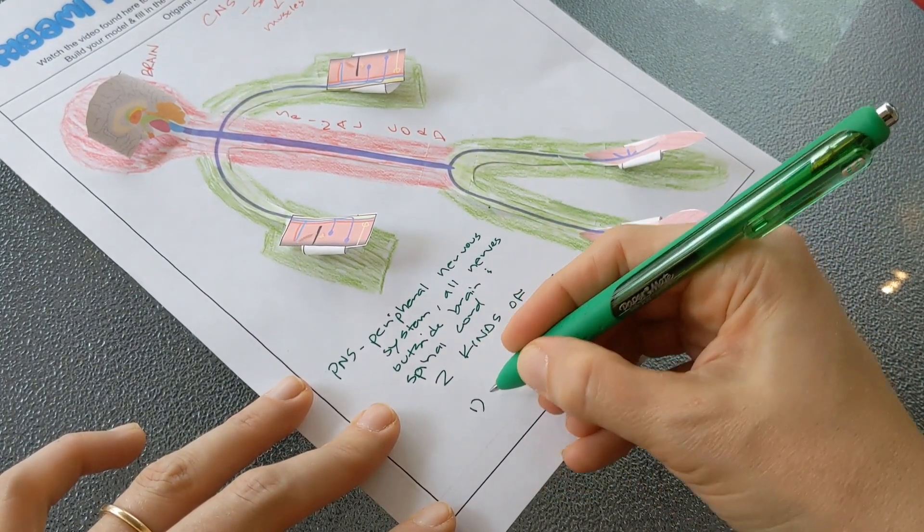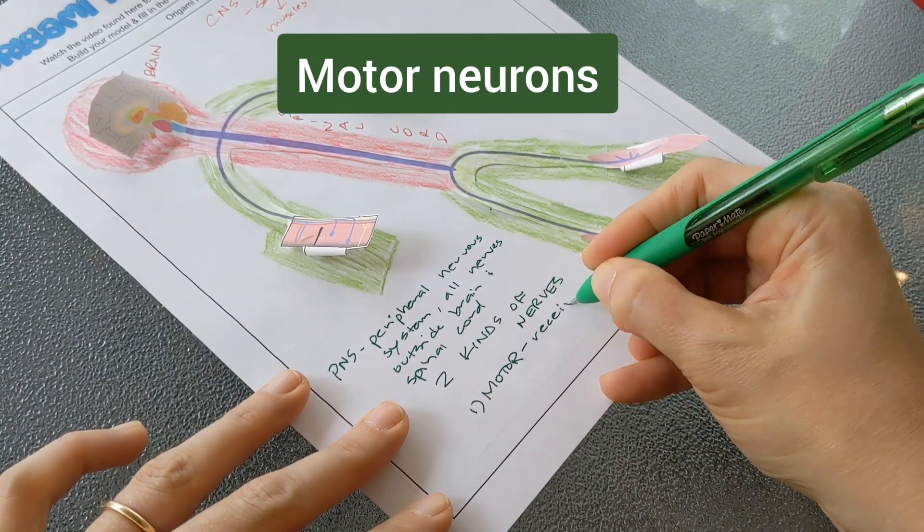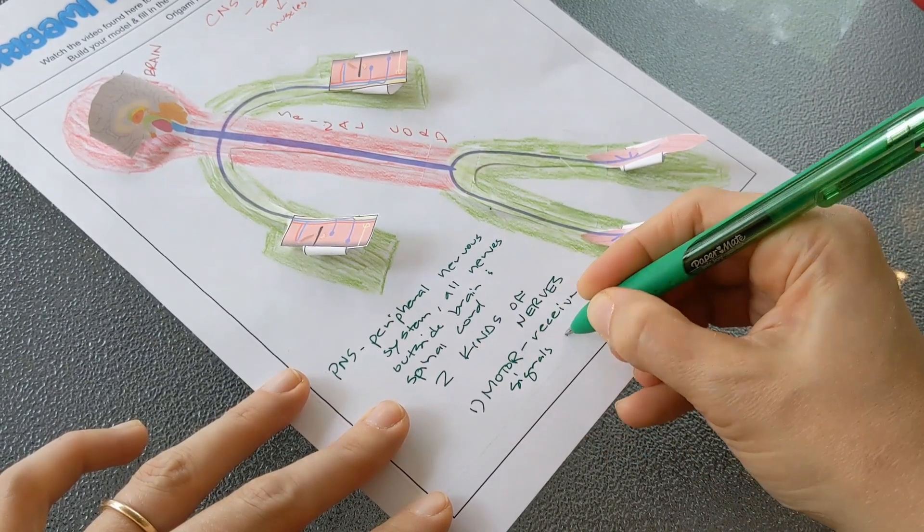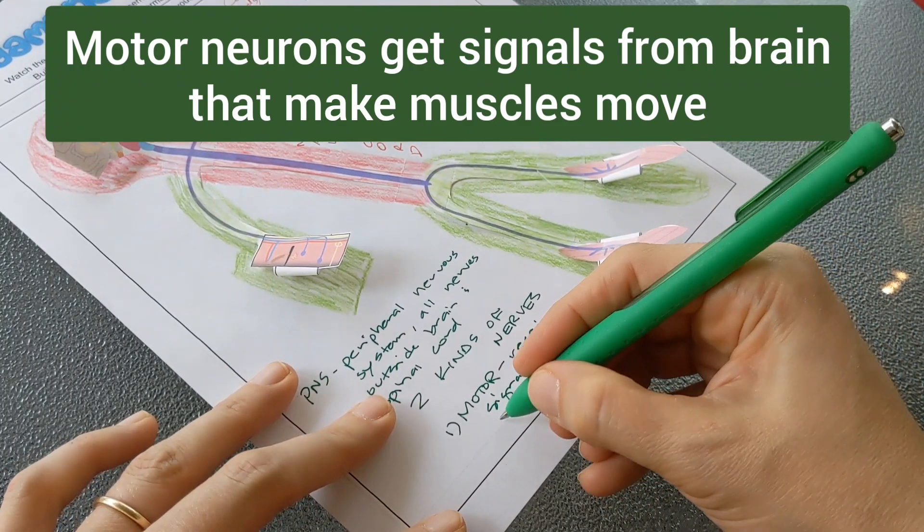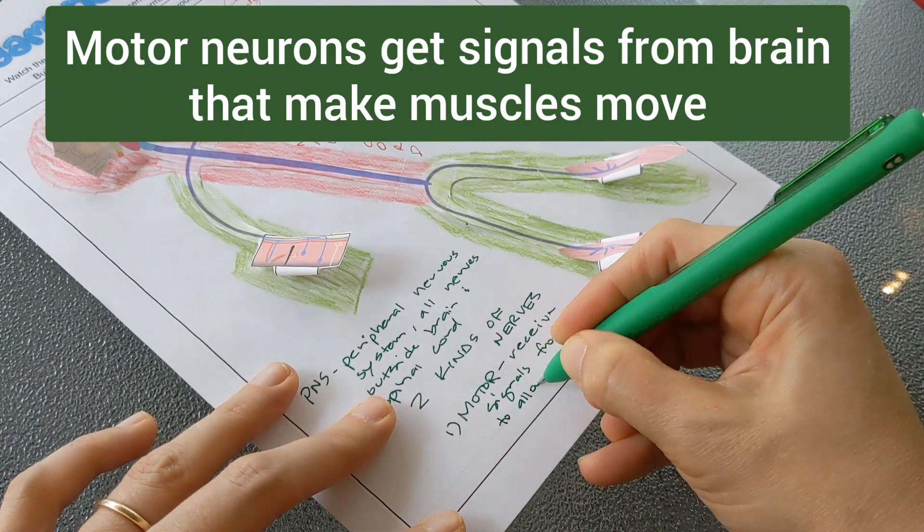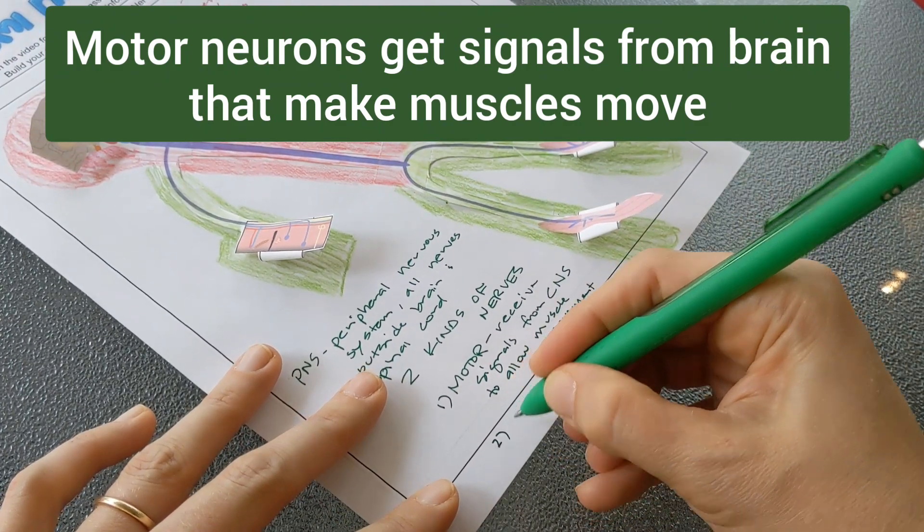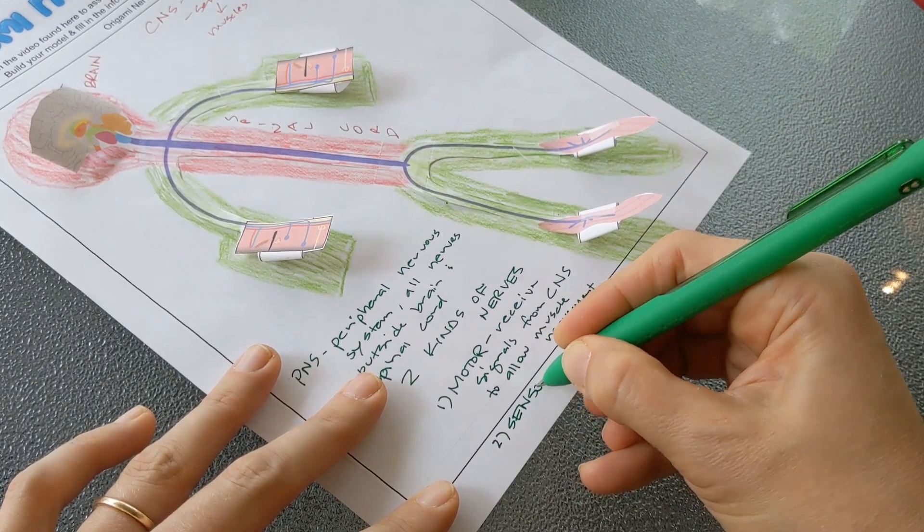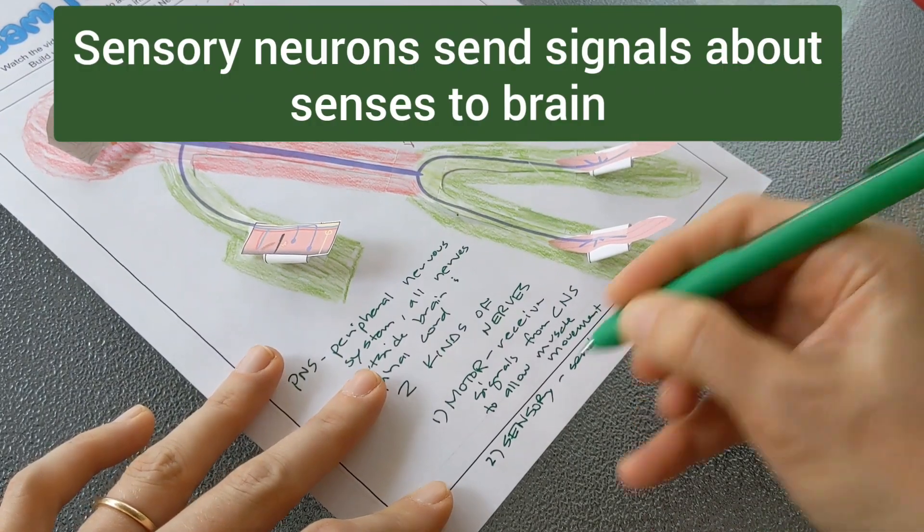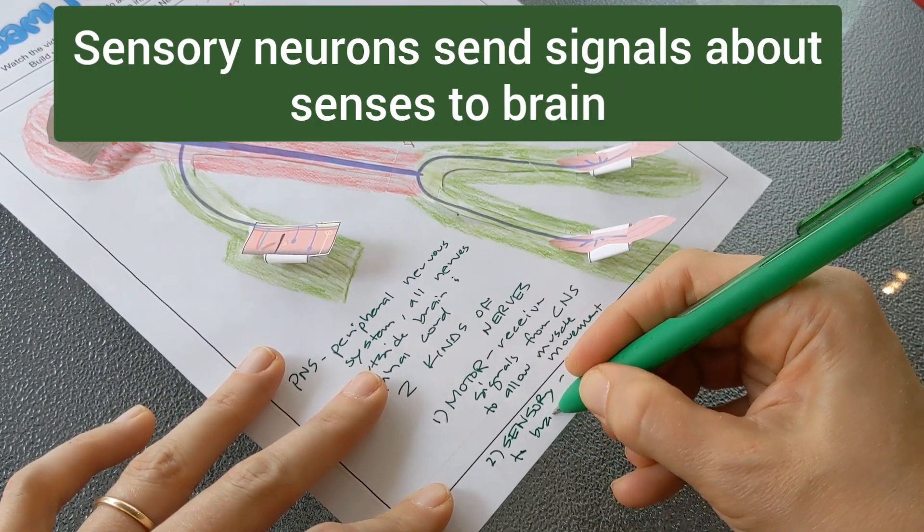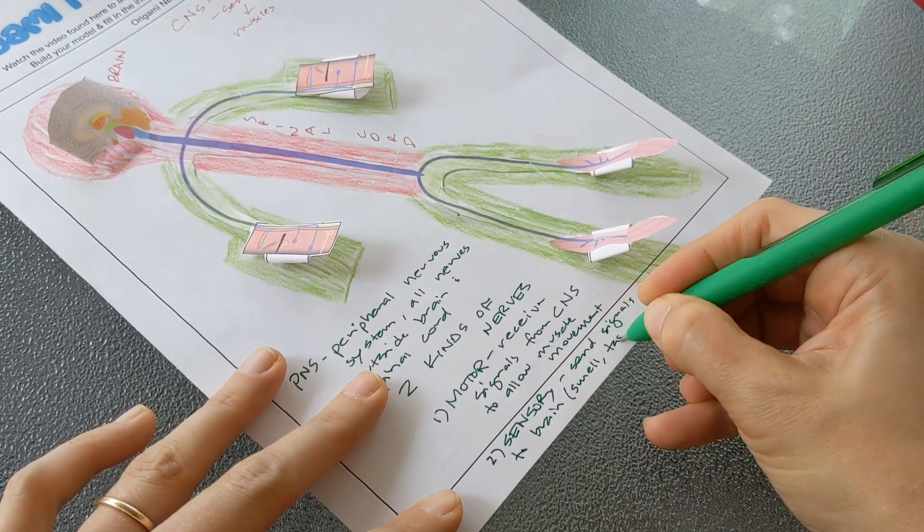You have the motor neurons which receive signals from the brain to allow muscles to move, and you have sensory neurons which send signals to the brain about all of our senses, so things like smell, taste, touch.